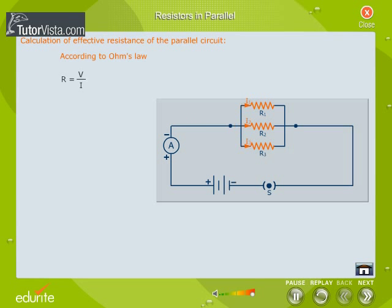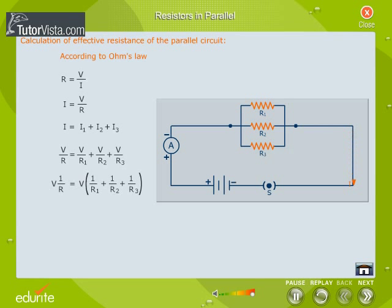According to Ohm's law, R is equal to V by I. In a parallel circuit, the current flowing through the individual resistors varies. Hence, we first calculate I1, I2 and I3. Total current I is equal to V by R, and I is equal to I1 plus I2 plus I3. Therefore, V by R is equal to V by R1 plus V by R2 plus V by R3. This gives V into 1 by R is equal to V into 1 by R1 plus 1 by R2 plus 1 by R3. This equation can be further simplified as shown here.